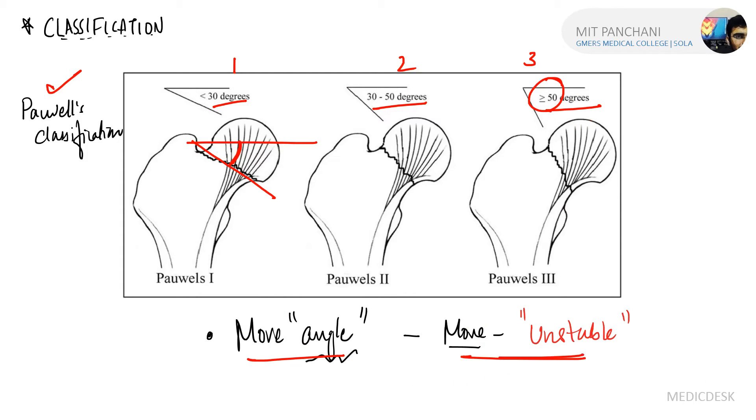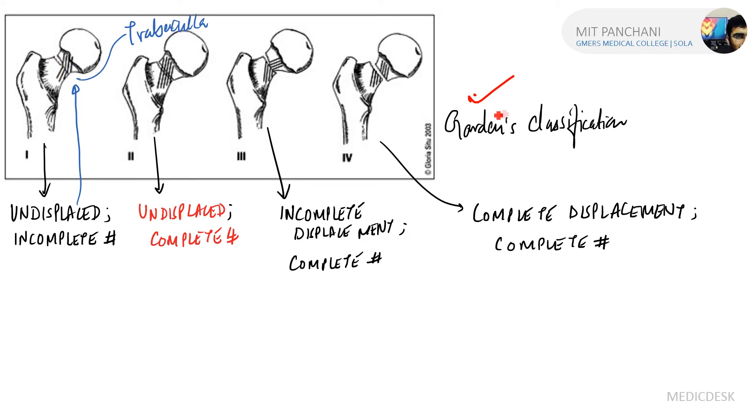In Garden classification, we look on the fracture side and the trabeculae. Depending upon the fracture type and trabeculae, the Garden classification is divided into four types. Type 1: the fracture is incomplete and the trabeculae are undisplaced.